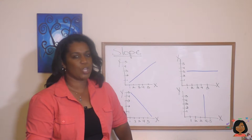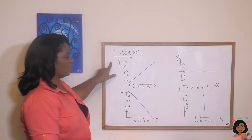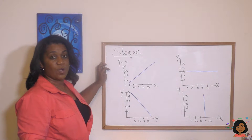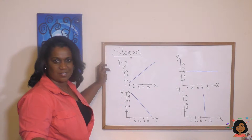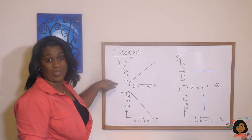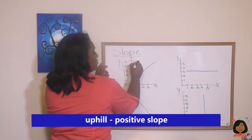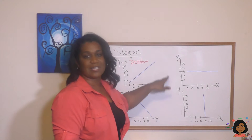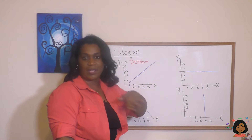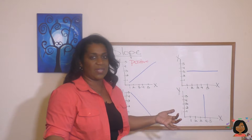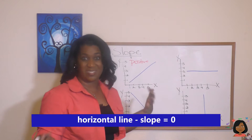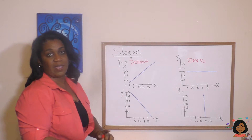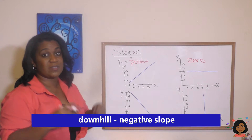Now let's put our lines on a grid to see if we can determine what kinds of slope we're talking about. Take a look at this one right here — is your slope positive, negative, zero, or can't we determine it? We can see that this is going uphill, so this is a positive slope. What about this one over here? This looks like if you were just walking along a level street — you'd say there's no slope, or zero slope. And this one, we're going down the hill, so the slope is negative.